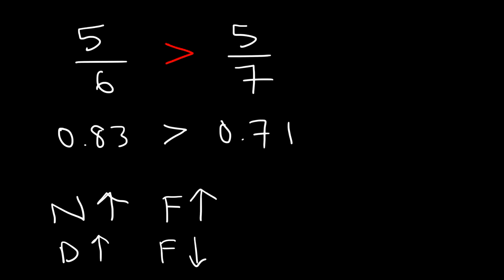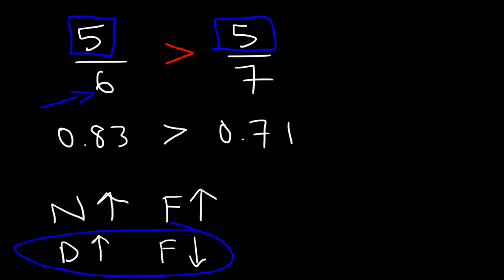So keep this in mind: if the numerator is the same, then the fraction with the smaller denominator will have a larger value. The fraction with the larger denominator will have a smaller value, because the value of the denominator and the value of the whole fraction are inversely related — as one goes up, the other goes down.